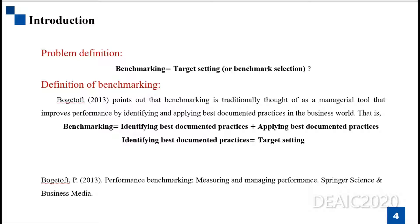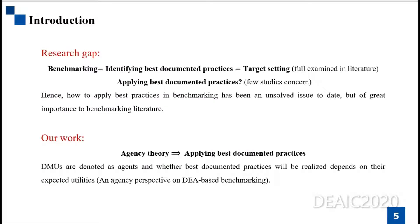Benchmarking is the sum of identifying best documented practice and applying best documented practice. The component of identifying best documented practice equals the aforementioned target setting. From this definition, we may find the research gap in previous DEA-based benchmarking studies. Identifying best documented practice is well examined in literature, but applying best documented practice receives only limited attention. Hence, how to apply best practice in benchmarking has been an unsolved issue to date, but is of great importance. Our work originated from this research gap, and we integrate agency theory into how to apply best documented practice in benchmarking.